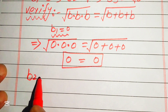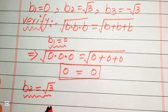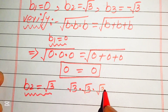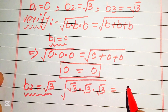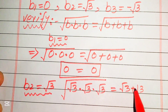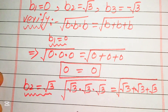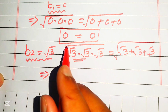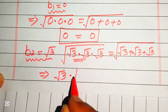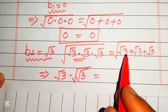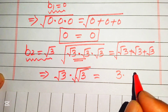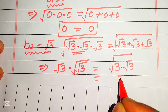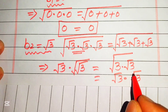Now we verify the second root, b2 equals √3. Substituting on both sides: the square root of √3 times √3 times √3 equals the square root of √3 plus √3 plus √3. On the left, √3 times √3 equals 3, so we have the square root of 3 times √3. On the right, we have the square root of 3√3. Both sides are equal, so b2 equals √3 satisfies the equation.